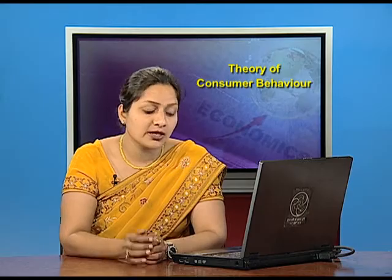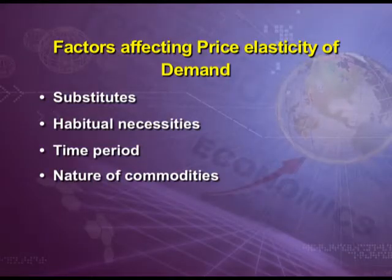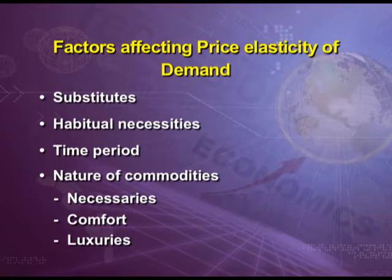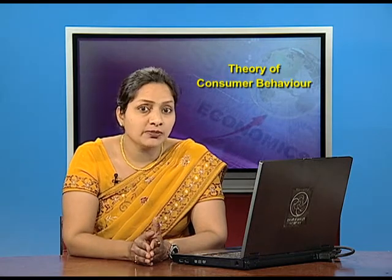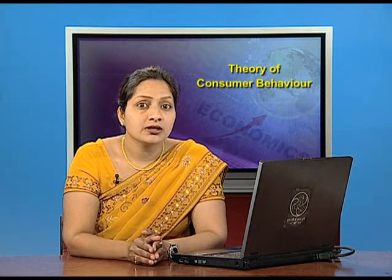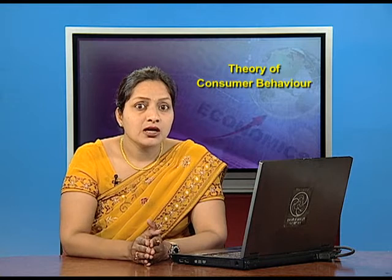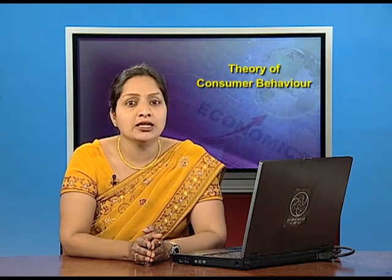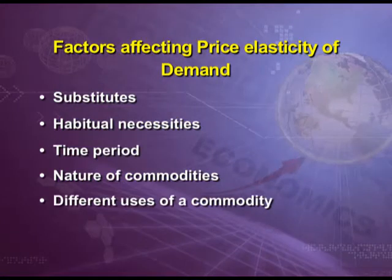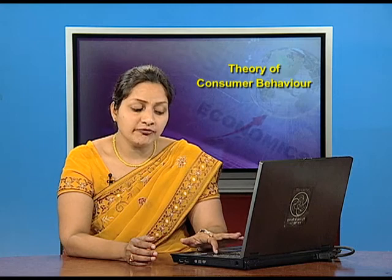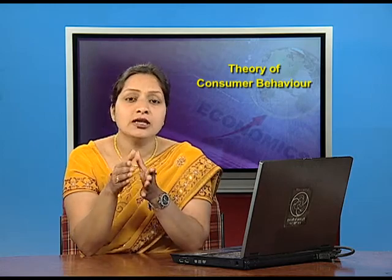The fourth factor is the nature of commodities — necessaries, comforts, and luxuries. Price elasticity for necessaries is very low as they are purchased even if prices rise, for example food grains and books. Demand for luxuries is elastic. Demand for comfort goods like fans, coolers, and televisions is neither very elastic nor very inelastic. The fifth factor is different uses of a commodity: demand for a commodity with many uses — like milk, electricity, or petrol — is generally elastic, because if their price falls you can use them in many more ways.